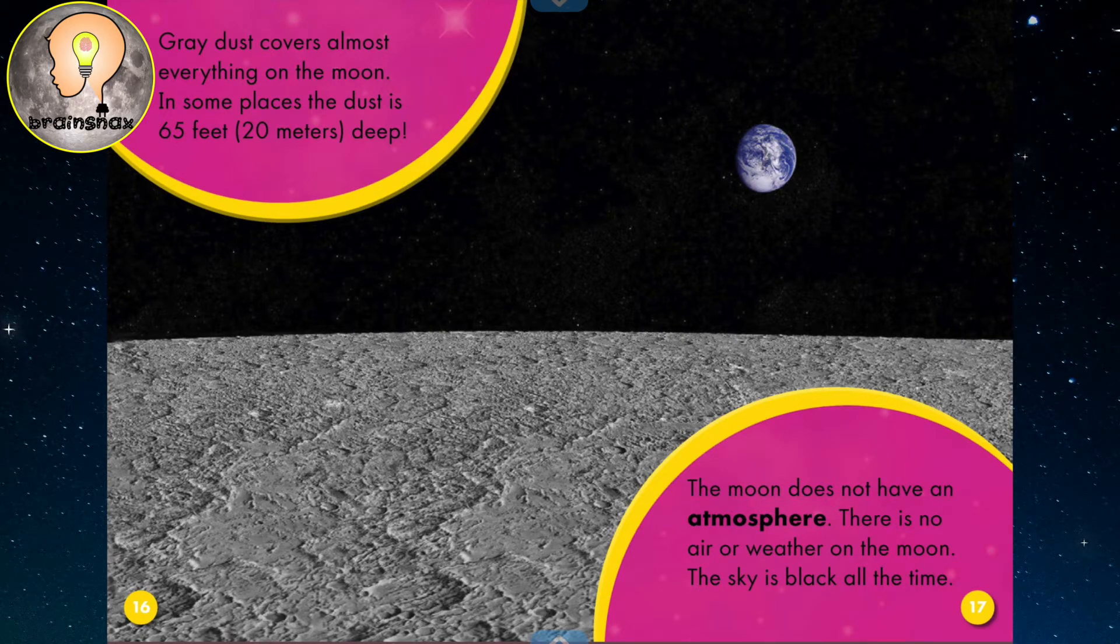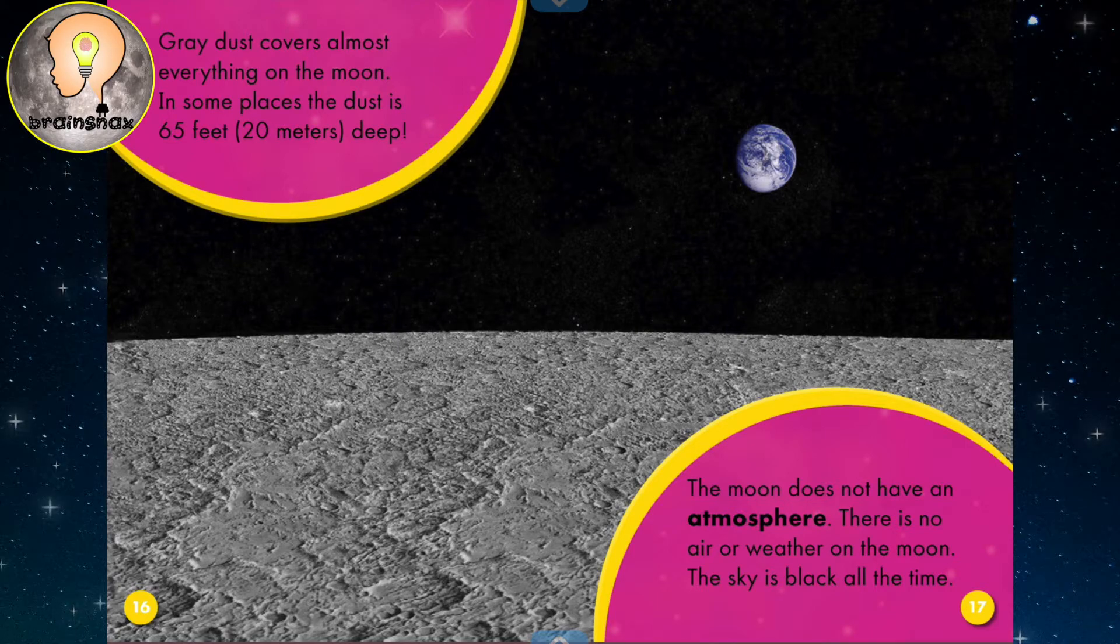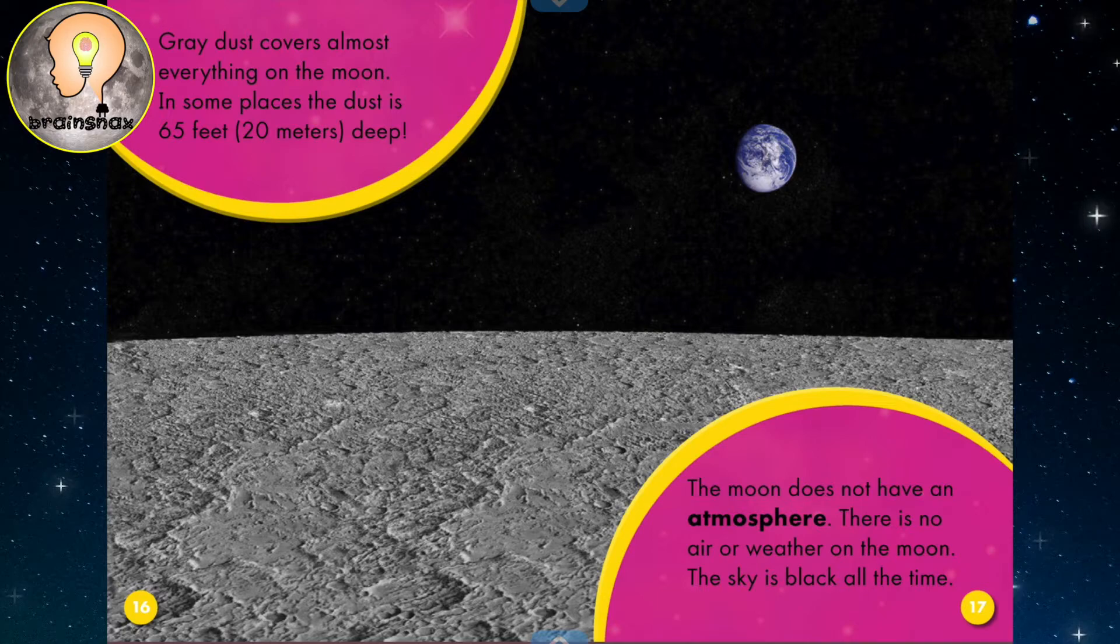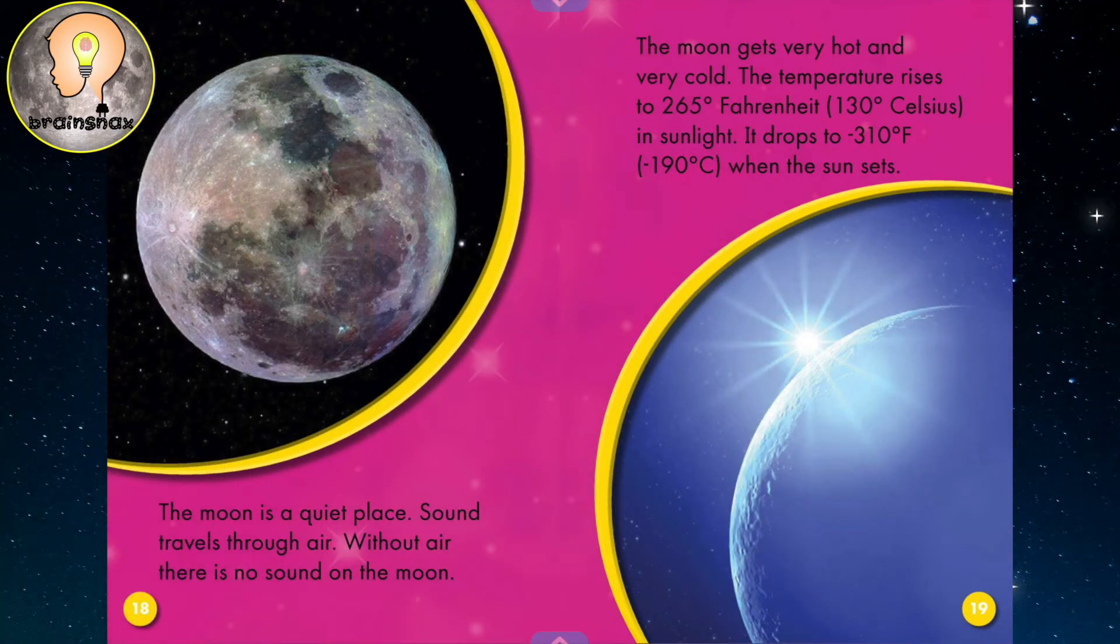The moon does not have an atmosphere. There is no air or weather on the moon. The sky is black all the time. The moon is a quiet place. Sound travels through air. Without air, there is no sound on the moon.